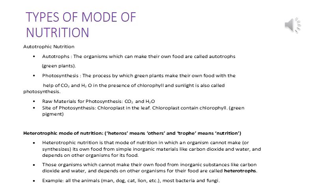I have not classified parasitic nutrition separately; rather, I have subclassified heterotrophic mode of nutrition into three subcategories. Regarding autotrophic mode of nutrition, organisms that perform such nutrition are known as autotrophs — these are basically green plants and also certain organisms that use chemicals to synthesize their own food, like green sulfur bacteria.